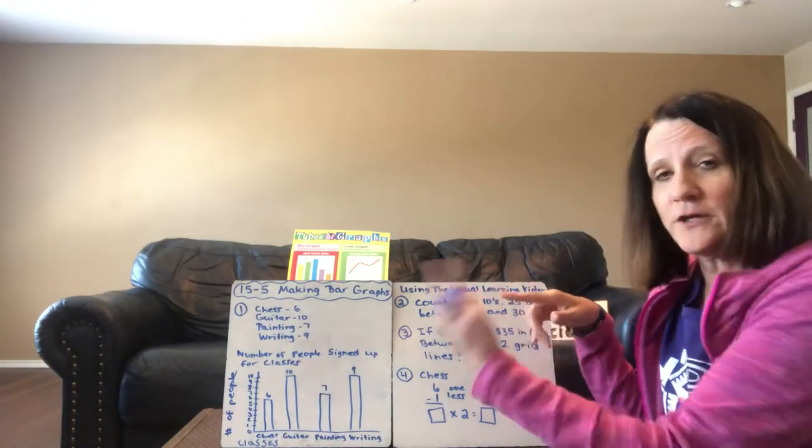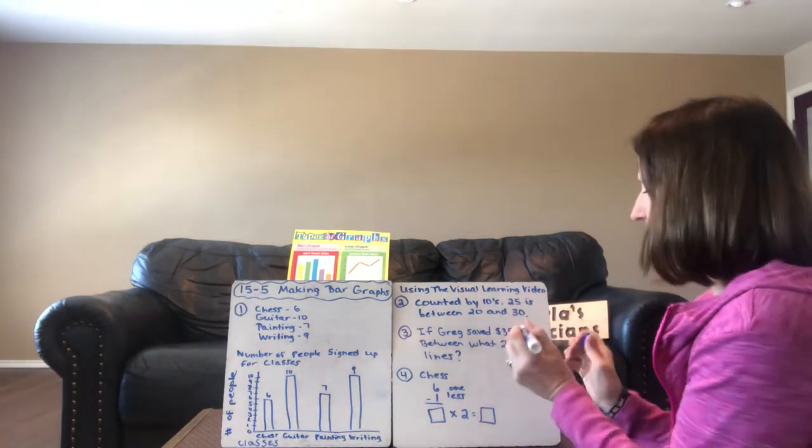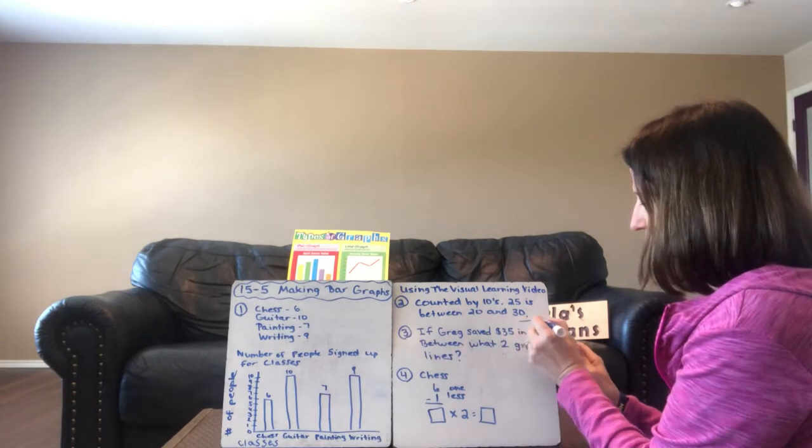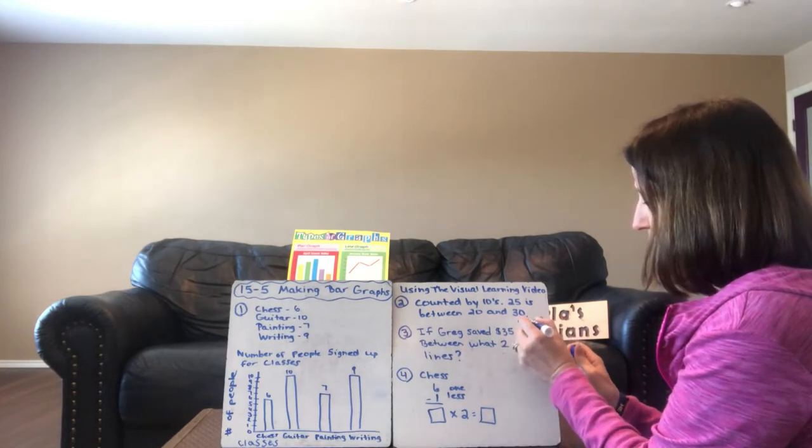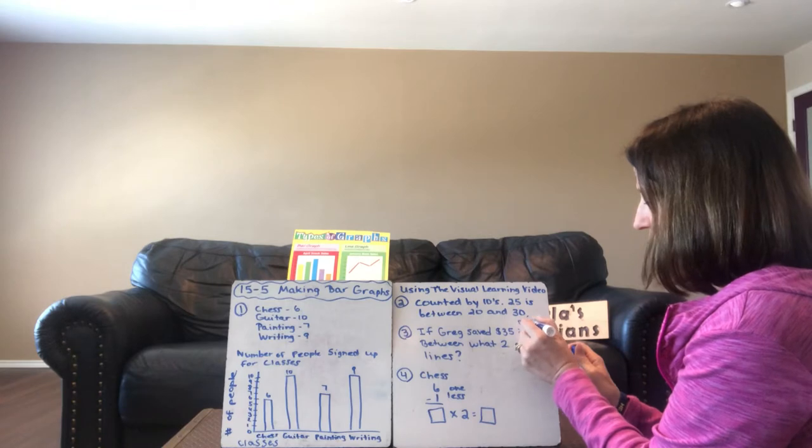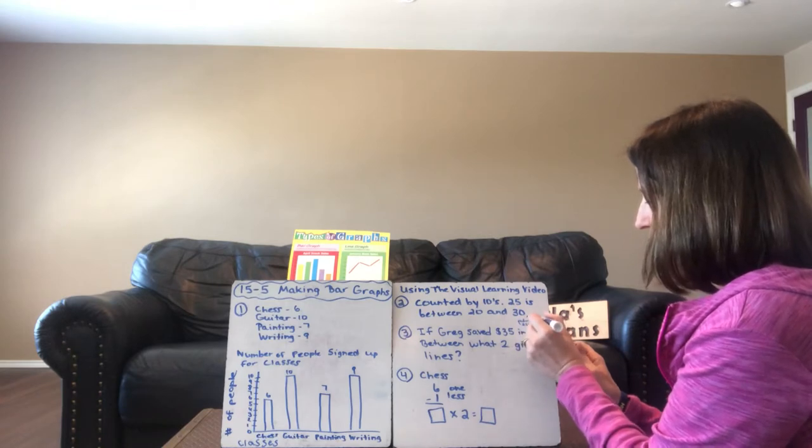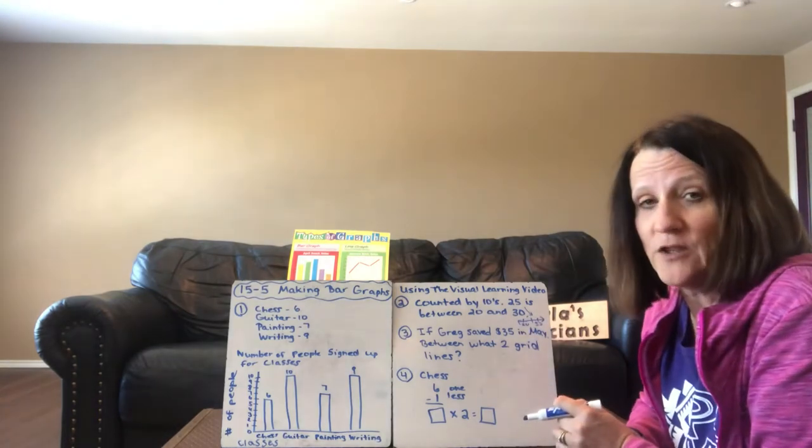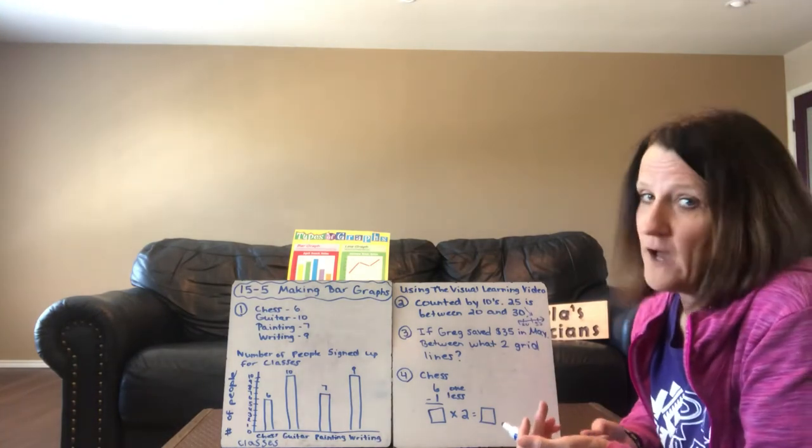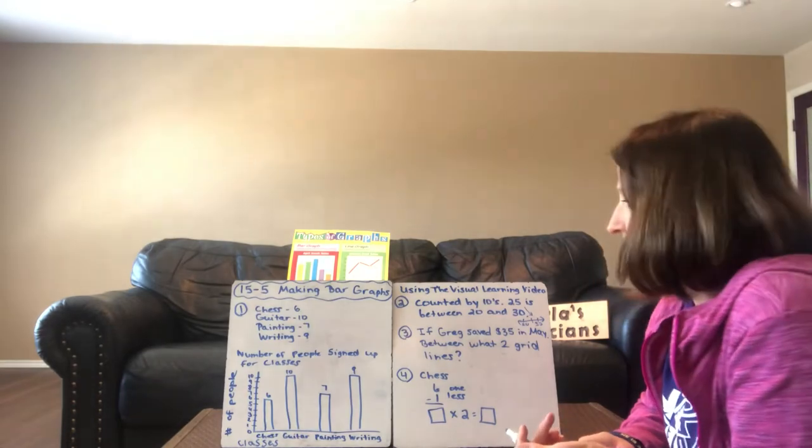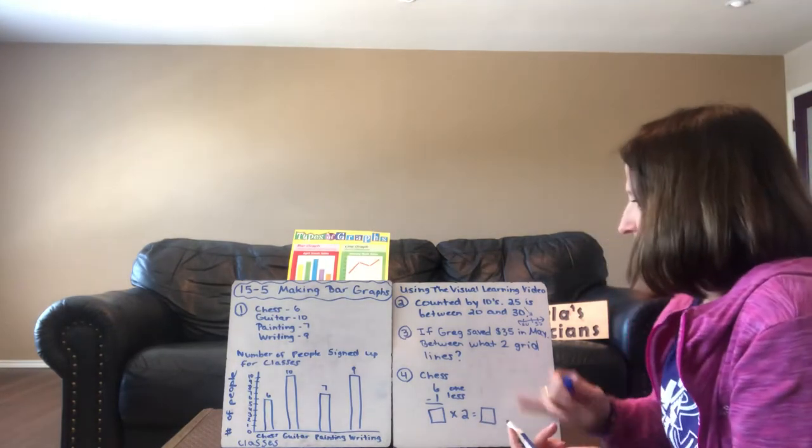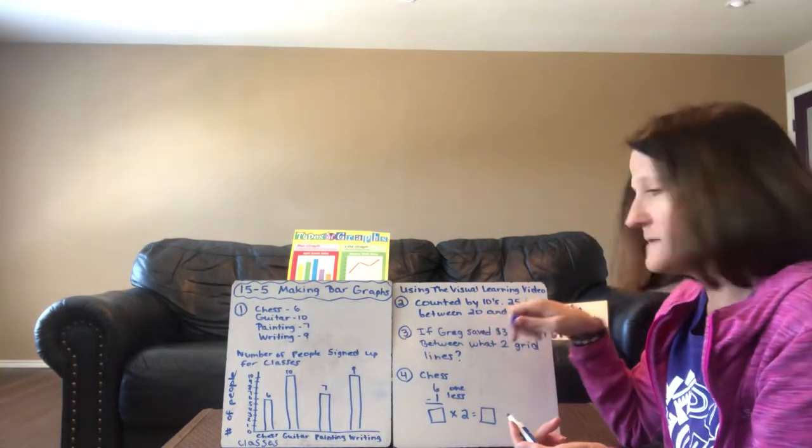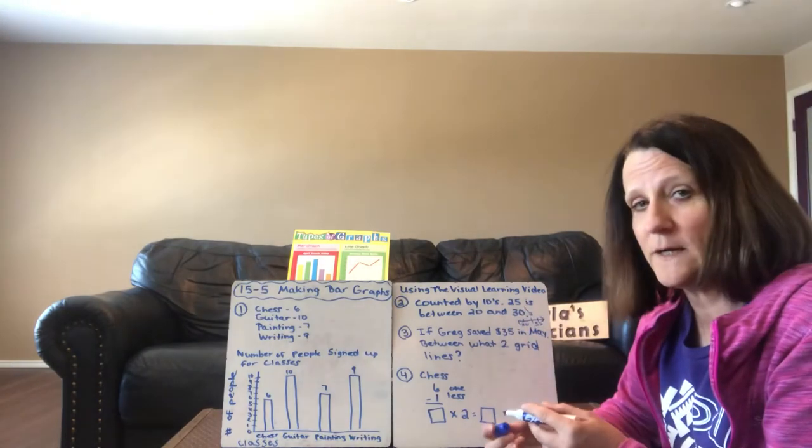And if you're looking on a number line, the 25 would be right in between the 20 and 30. We'd have 20, 30, and then 25 would be right in the middle of 20 and 30. If I count by 5, 10, 15, 20, 25, 30, that's why, because they counted by tens, the 25 is between the 20 and the 30.